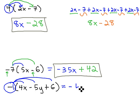Negative 1 times 4x is negative 4x. Negative 1 times negative 5y is positive 5y. And negative 1 times positive 6 is negative 6.